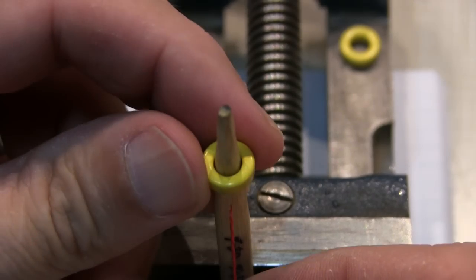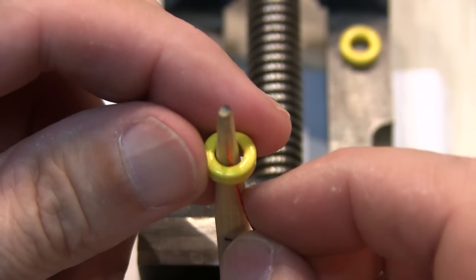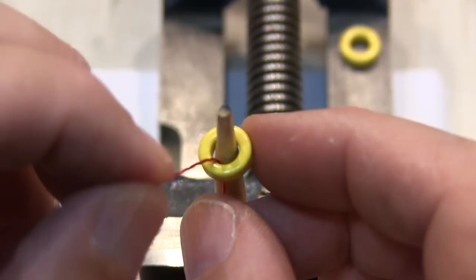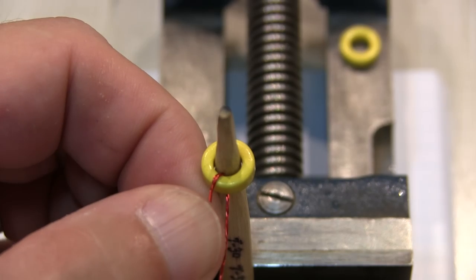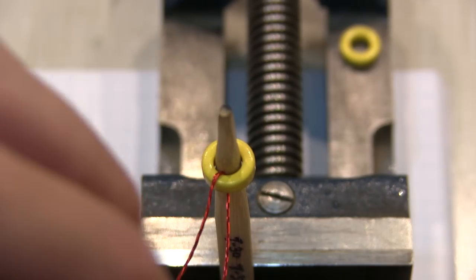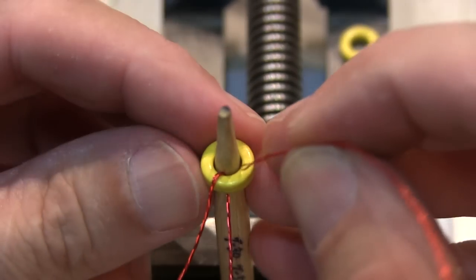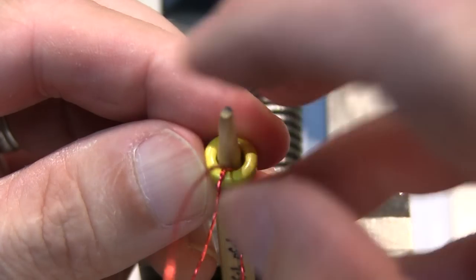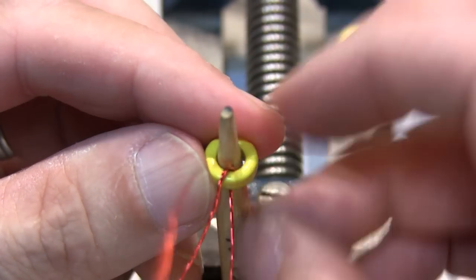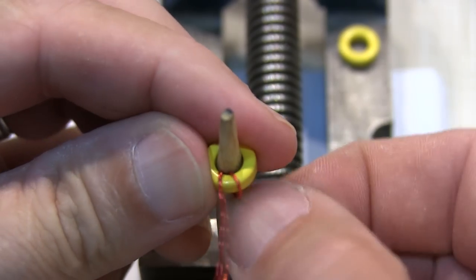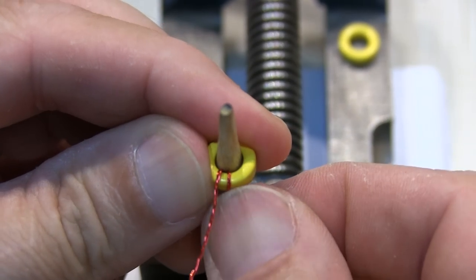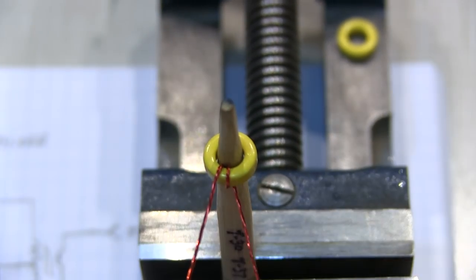So we'll do about 10 turns here. The first one is usually the trickiest because nothing is tight yet. So I'll pull some wires through here. And that's essentially the first turn. Every pass through the toroid is considered a turn. And let's bring the second turn through here. And we'll pull that down and tighten it up.